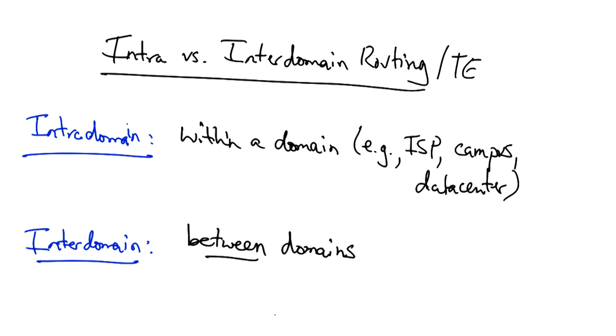In contrast, inter-domain routing and inter-domain traffic engineering concerns routing that occurs between domains, something that we looked at before in the context of the border gateway protocol.